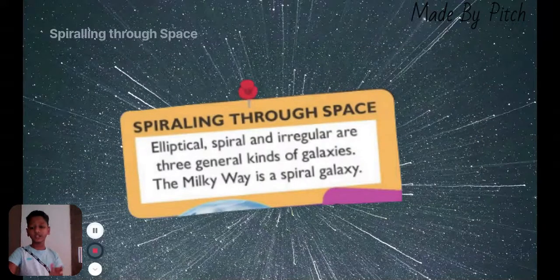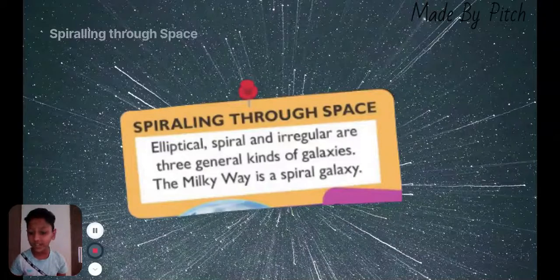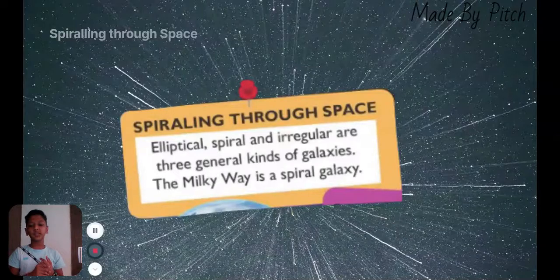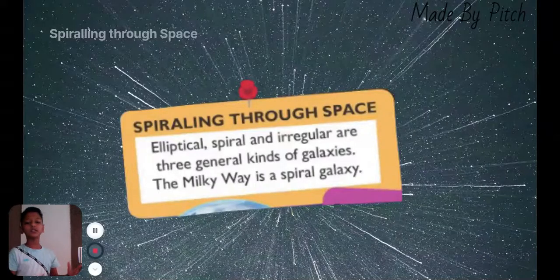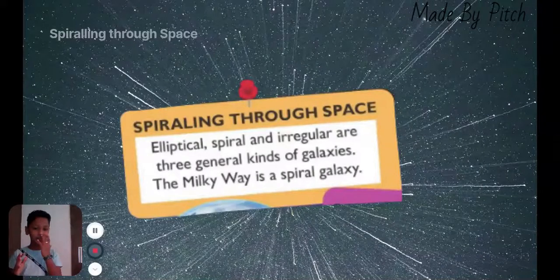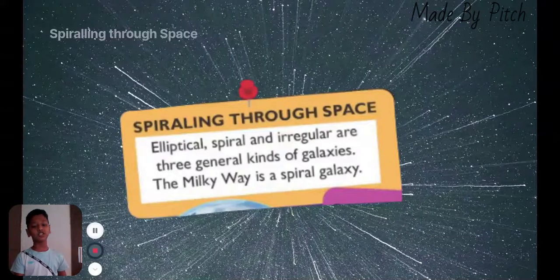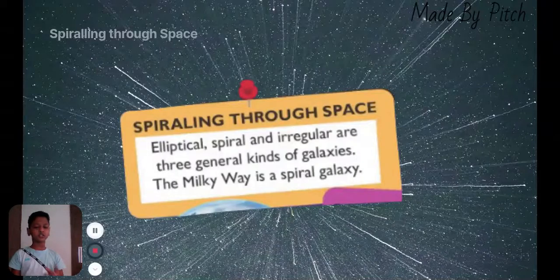So, let's... This is the main topic. Spiraling through space. Elliptical, spiral, and irregular are three general kinds of galaxies. The Milky Way is a spiral one.